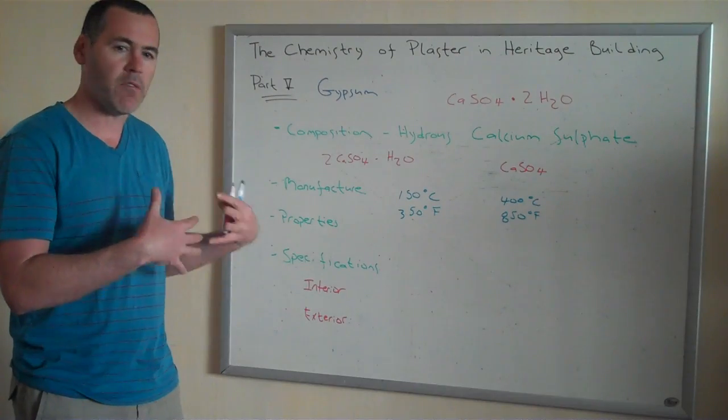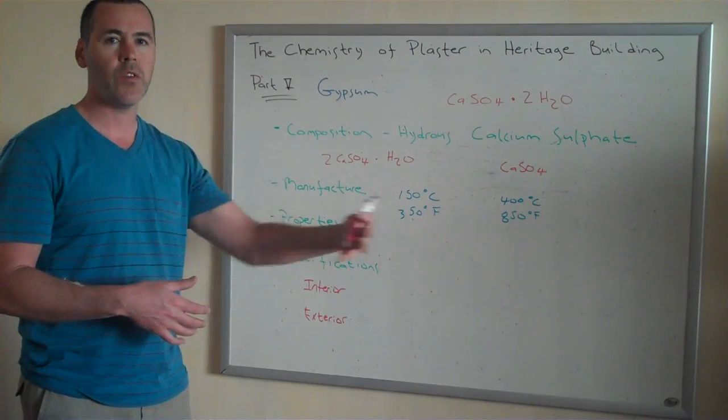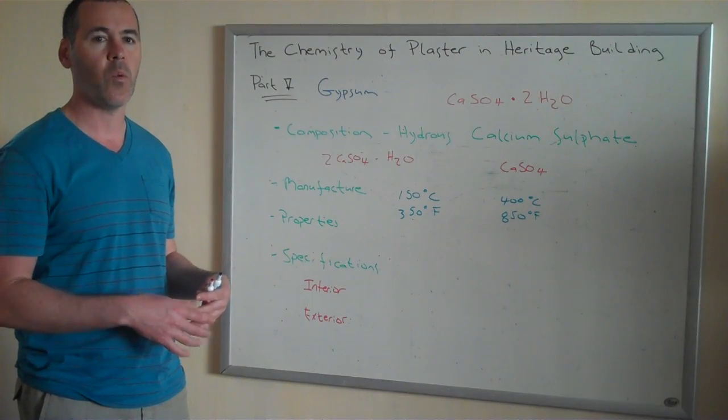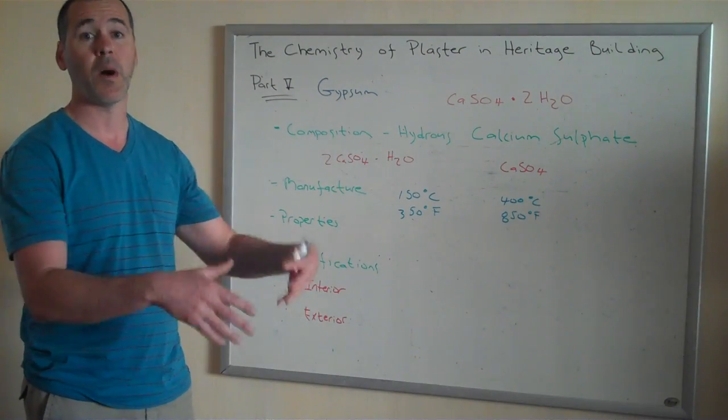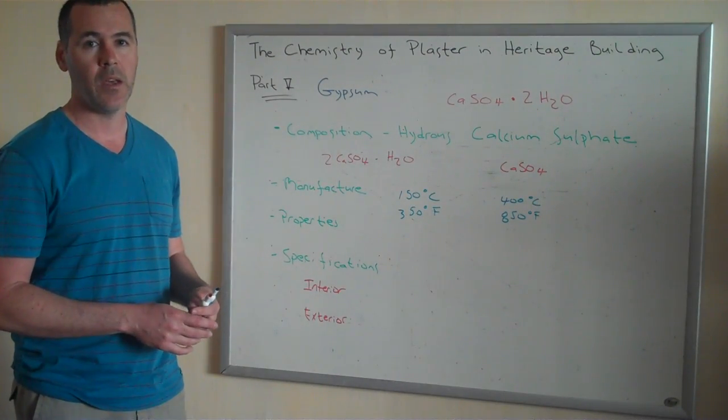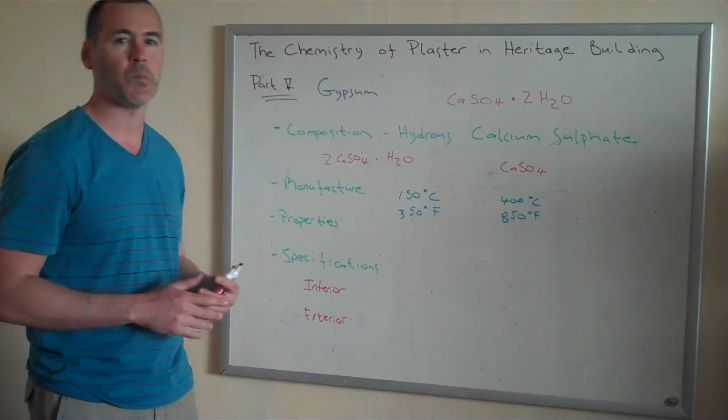And what happens is, even if the fire is burning at 1,500 degrees on one side of the partition, on the other side, the temperature stays well below the temperature needing to spontaneously combust. That's because the gypsum is off-gassing steam. Steam suppresses the temperature.